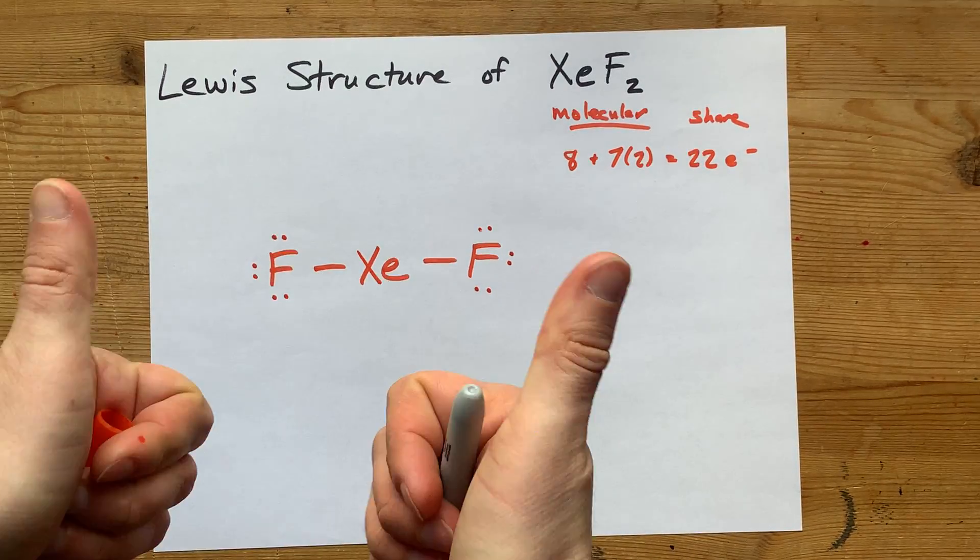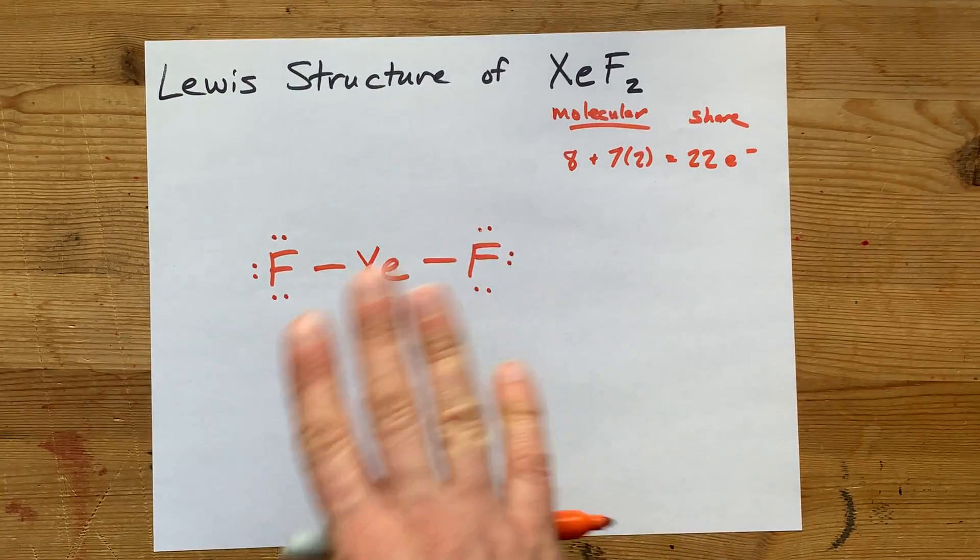See? Two, four, six, eight. Happy. Two, four, six, eight. Happy. Great.